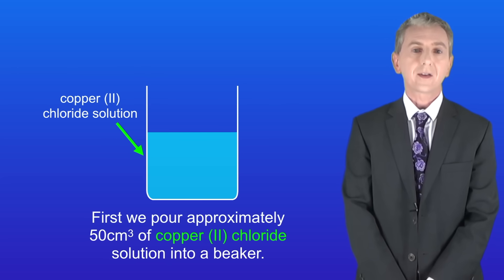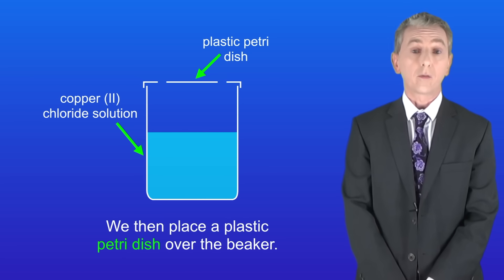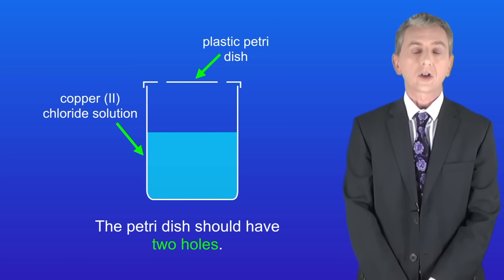First we pour approximately 50 centimeters cubed of copper chloride solution into a beaker. We then place a plastic petri dish over the beaker. The petri dish should have two holes.